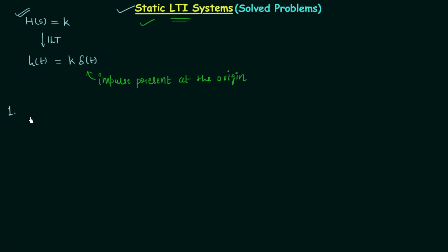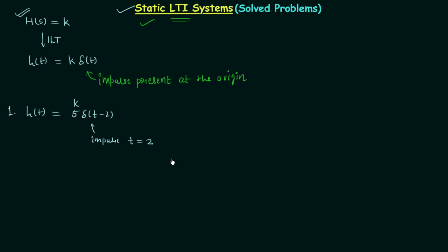The first problem has the impulse response h(t) = 5·δ(t−2). Comparing this with the condition h(t) = k·δ(t), we find k = 5, but δ(t) is not equal to δ(t−2). This means we don't have the impulse present at the origin — it is present at t = 2. So the condition is not satisfied, and the LTI system is a dynamic LTI system.